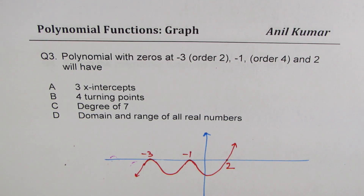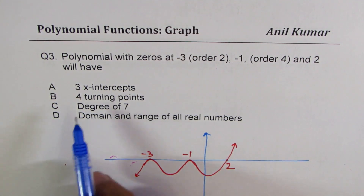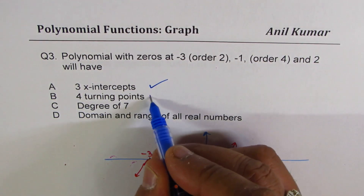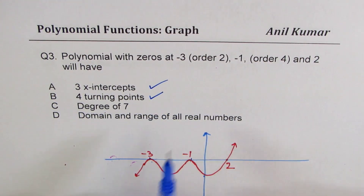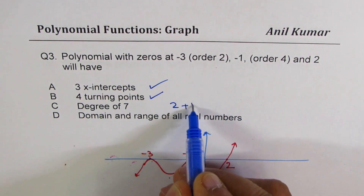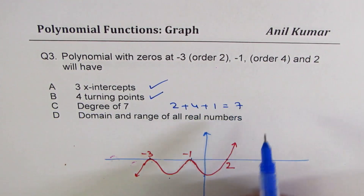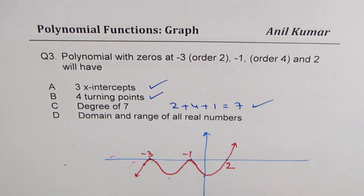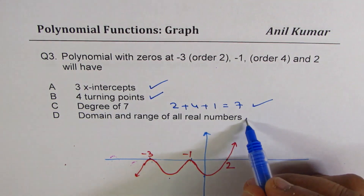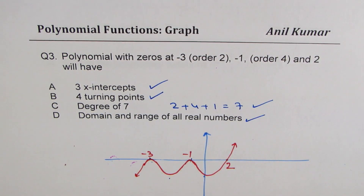Looking at the options: 3 x-intercepts — 1, 2, 3 — that is correct. 4 turning points — 1, 2, 3, 4 — that is correct. Degree of 7: some of you will just add 2 plus 4 plus 1 equals 7 and think this is correct. The last part — domain and range of all real numbers — yes, that is correct.